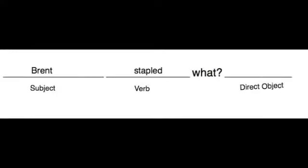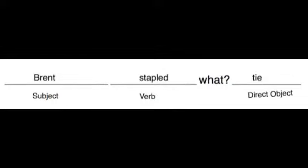One more example: 'Brent stapled the tie.' Brent is our subject. Stapled is our verb. Brent stapled what? He stapled the tie. So our direct object is 'tie.'